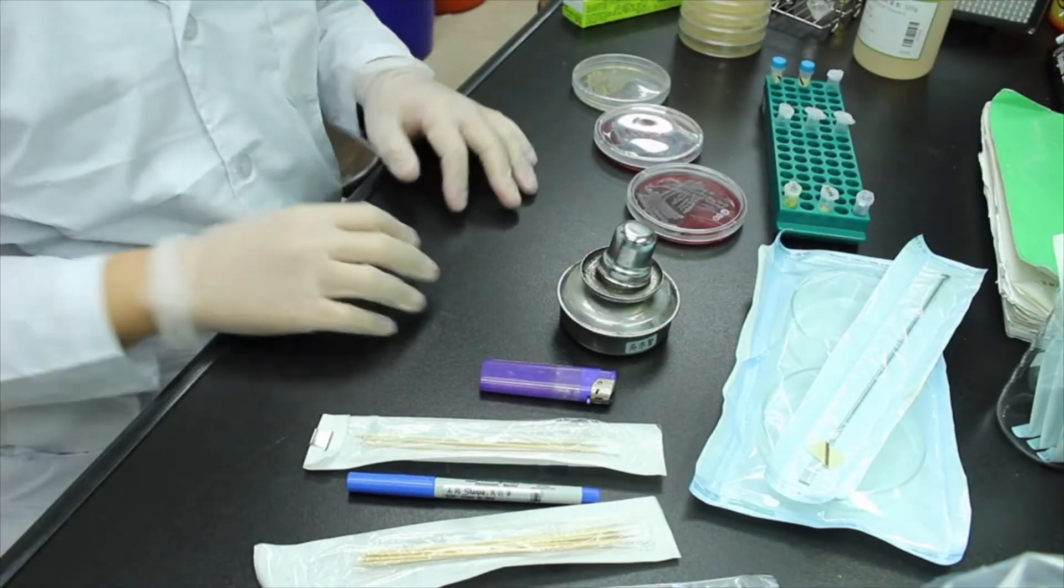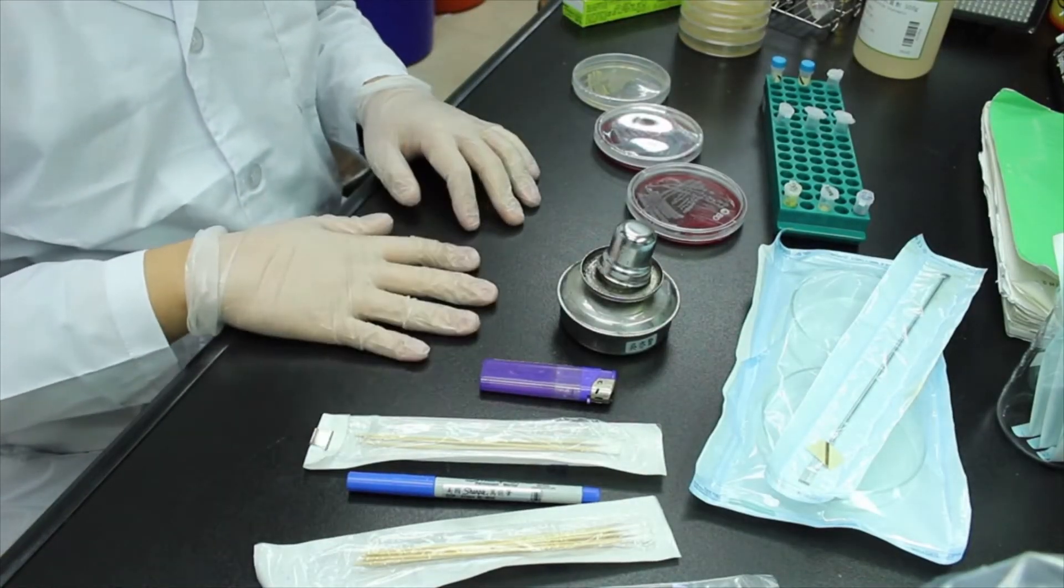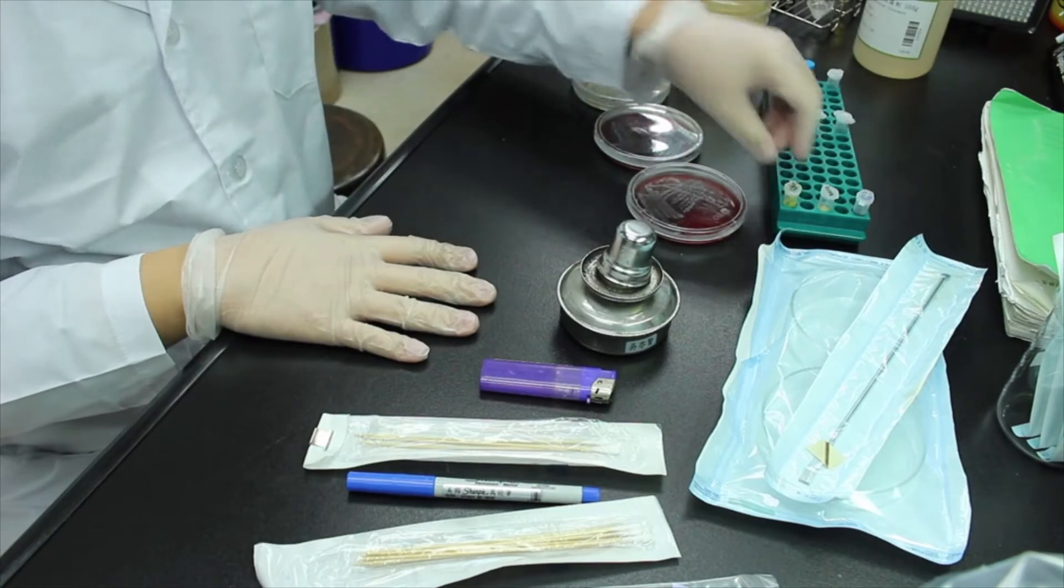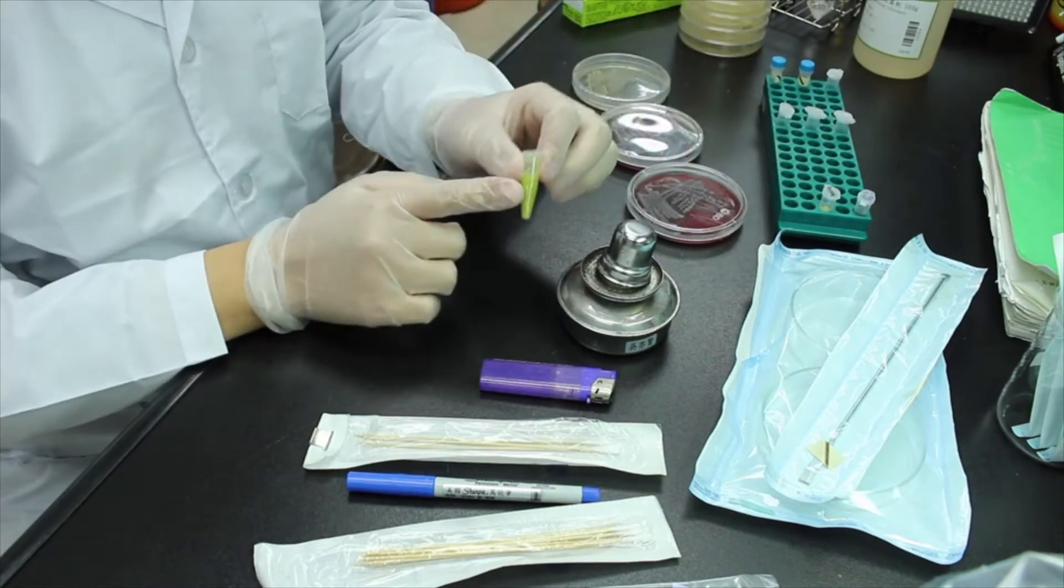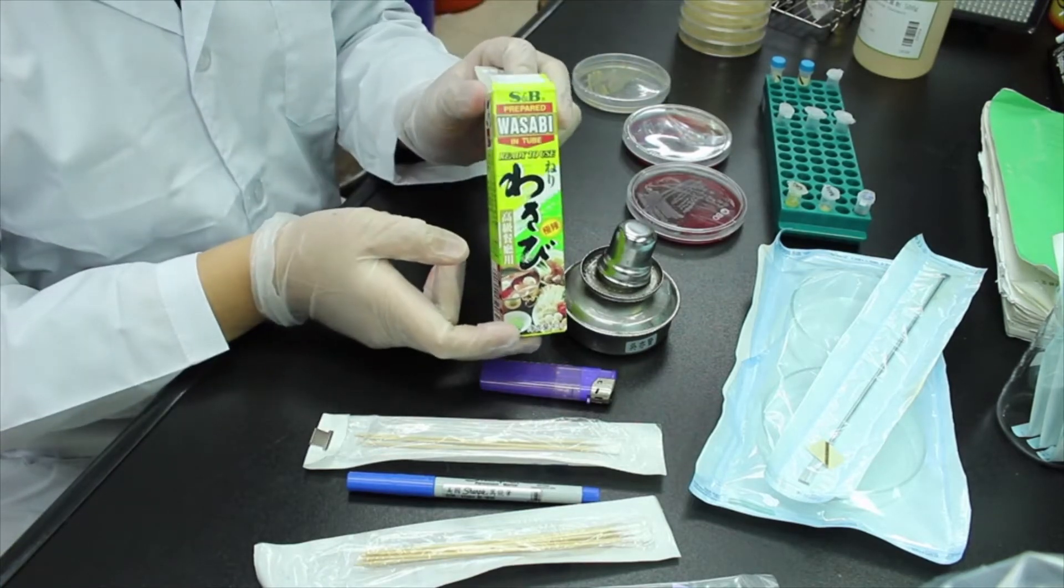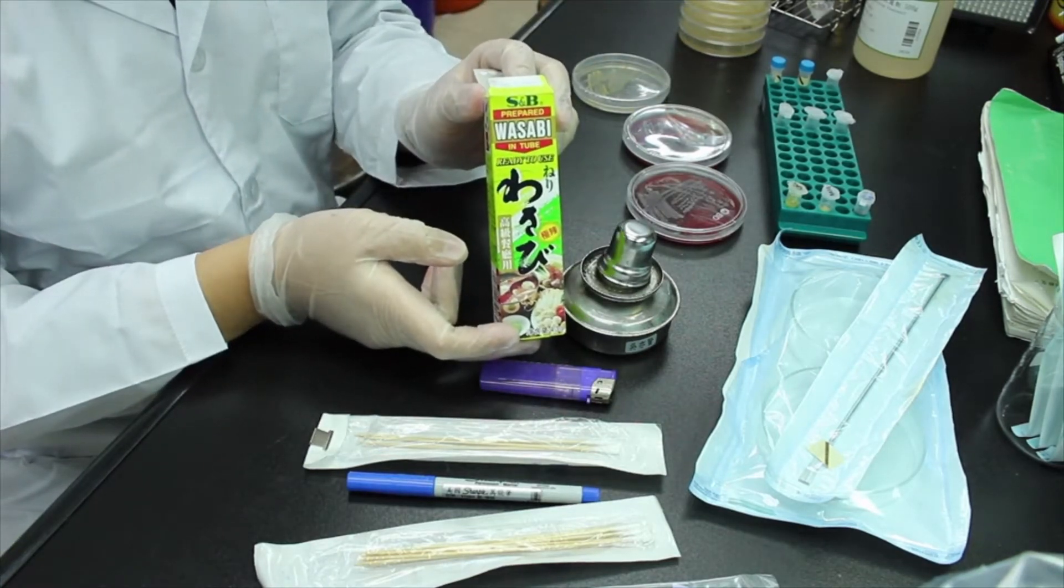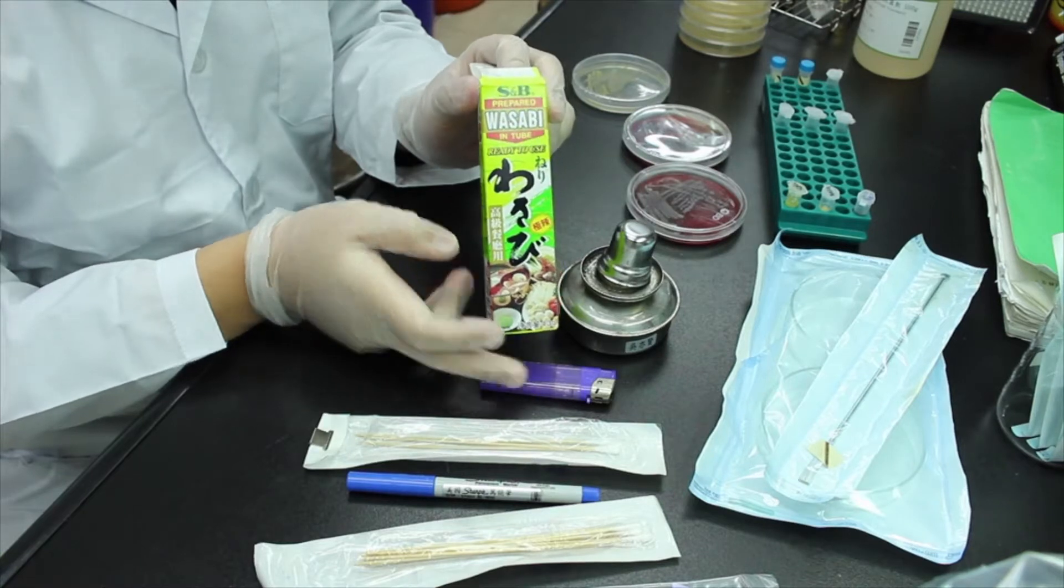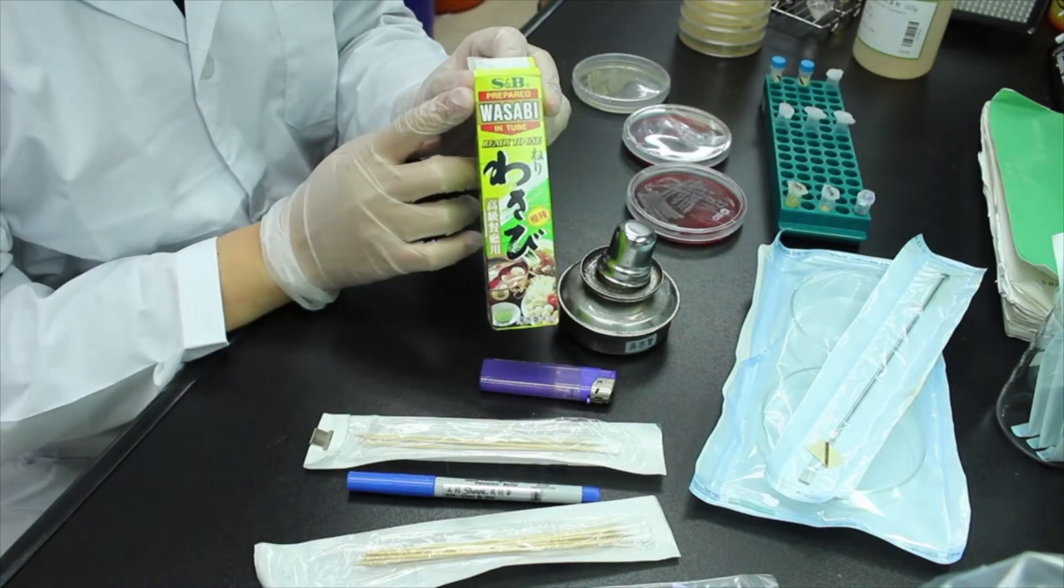Here I prepare some material for testing. First is the wasabi sauce. It is made by SMB, which is a Japanese brand. It is not made of real wasabi but another species of plant and adds wasabi flavor and food color. This is normally used as a cheap alternative.